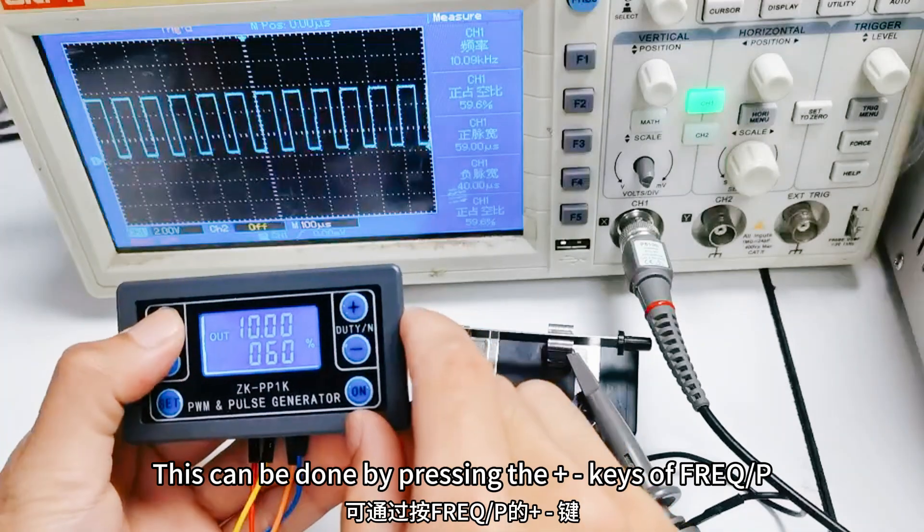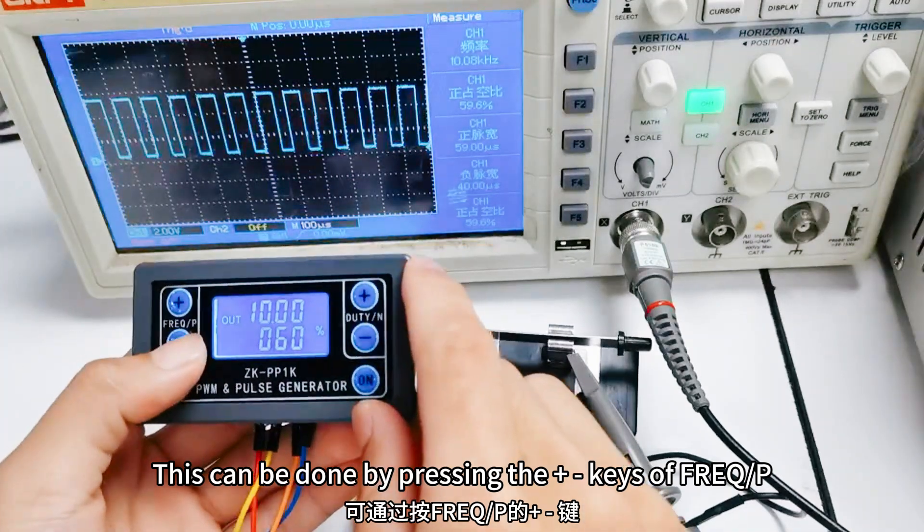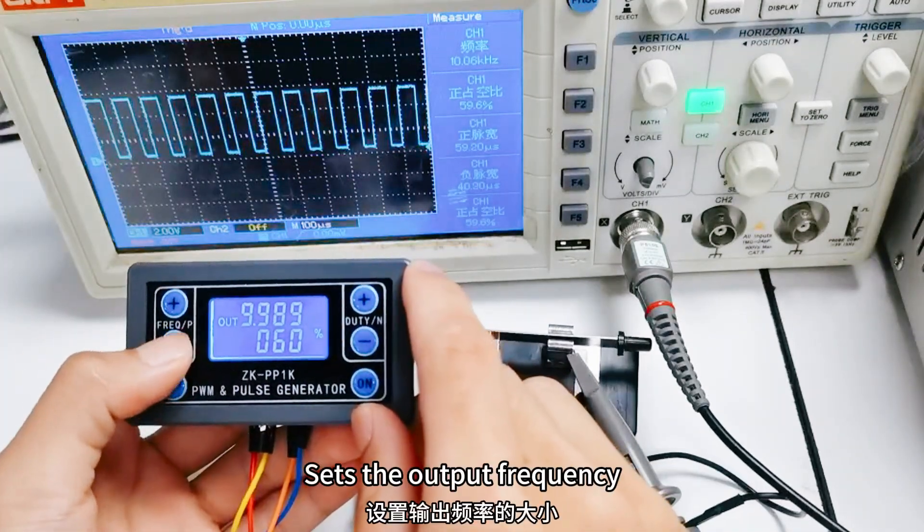This can be done by pressing the addition and subtraction keys of FragP. Set the output frequency.